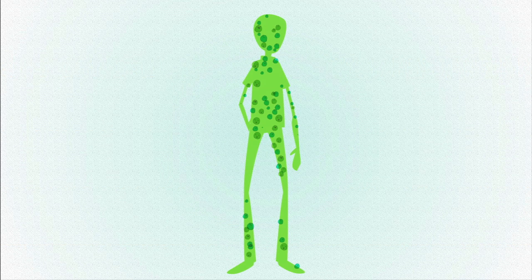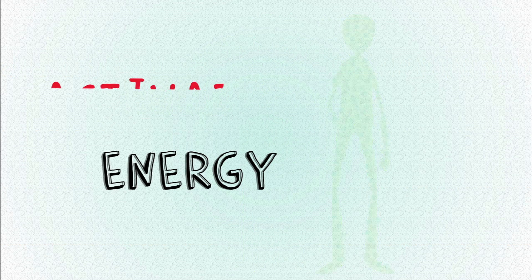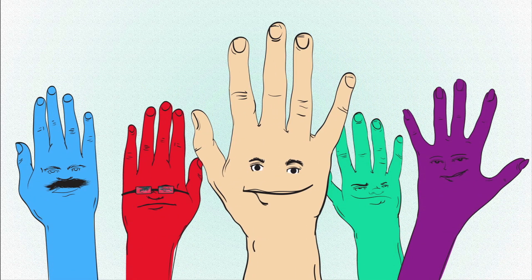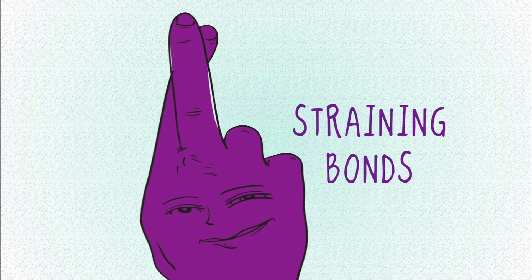Remember that all reactions need energy to get going. This energy is known as the activation energy. Enzymes lower that activation energy and speed the reaction through team mods: microenvironment, orientation, direct participation, and straining bonds.